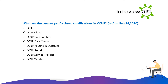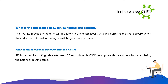Before February 2020 there was also CCNP Routing and Switching, CCNP Security, CCNP Service Provider, and CCNP Wireless. What is the difference between switching and routing? Routing moves a telephone call or a letter to the access layer. Switching performs the final delivery when the address is not used in routing and a switching decision is made.